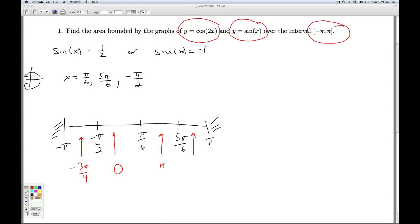Between pi over 6 and 5 pi over 6, pi over 2. Between 5 pi over 6 and pi, we could do 11 pi over 12. I plug in negative 3 pi over 4 to each of these guys, and I would get the cosine of negative 3 pi over 2, which is 0, versus the sine of negative 3 pi over 4, which is negative radical 2 over 2. Which of these is bigger? Well, this cosine is. So cosine of 2x is what the top curve is here.